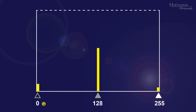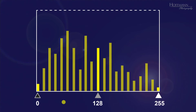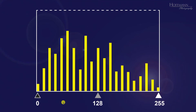For every one of those 256 brightness values there will be a vertical bar in the histogram — the higher the bar, the more pixels have a certain brightness value. It may happen that some of the vertical bars touch the upper limit of the histogram — that's not a problem, it's just a mathematical thing.